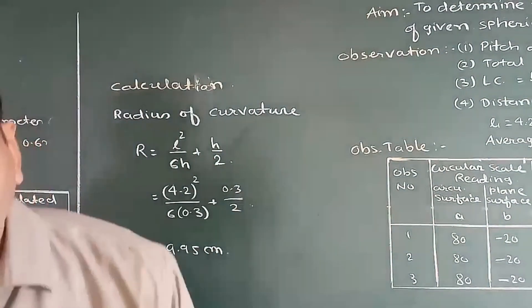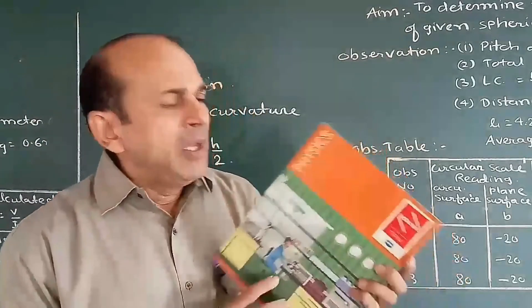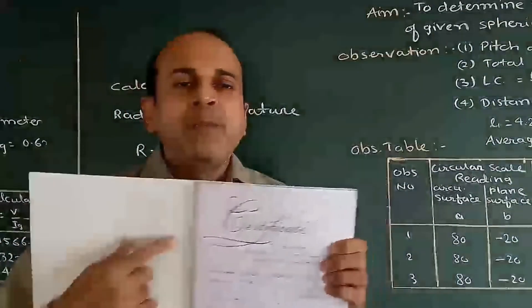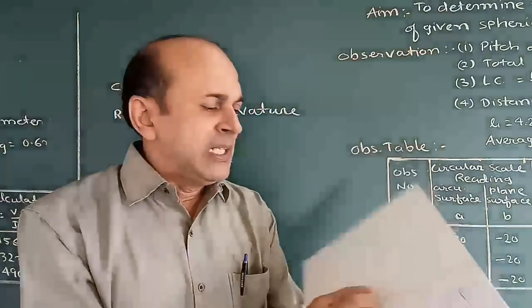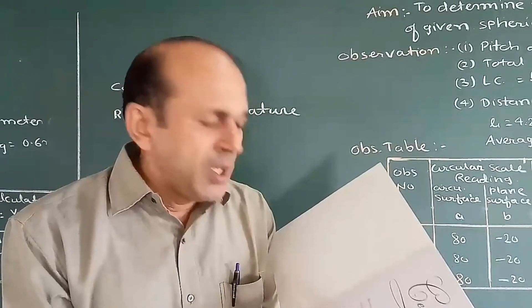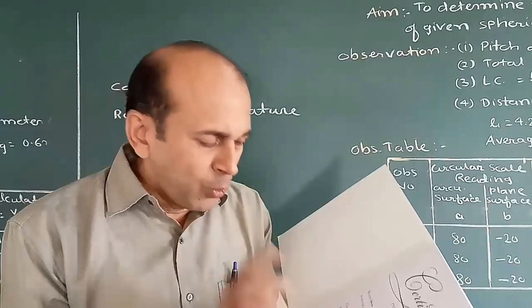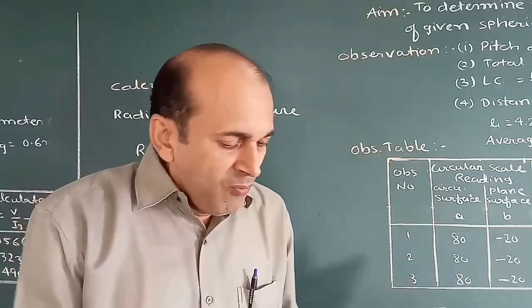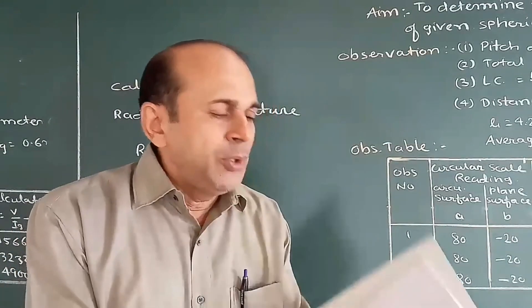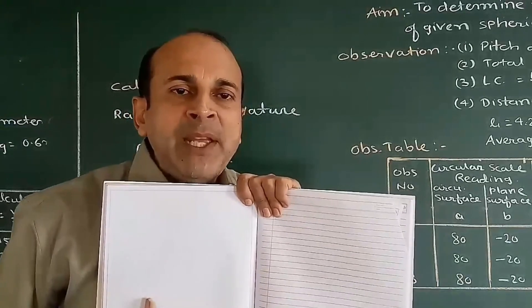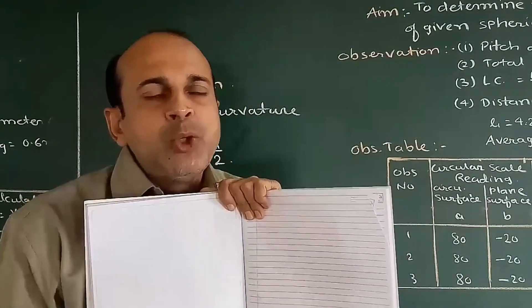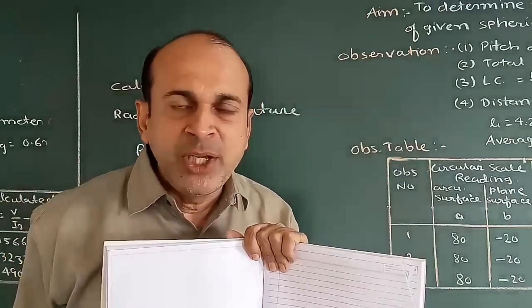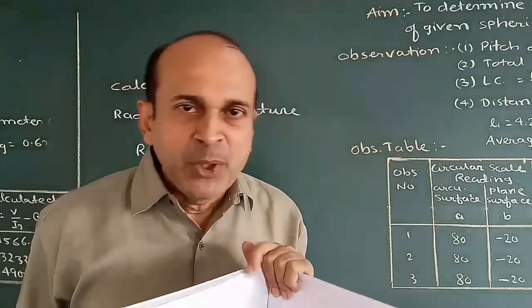Students, please purchase a journal from the market — a UWA or any journal with hard binding. On the first page, complete the certificate page by filling in the student's name, school name, class, division, roll number, and academic year 2020–2021. When writing the journal, the left page will be blank and the right page will be the written page. I will show you how to write it in the next lecture, after which you will complete your journal.